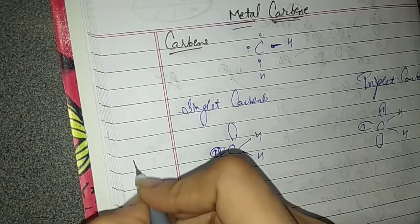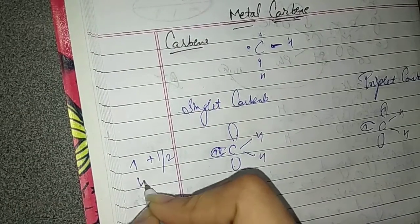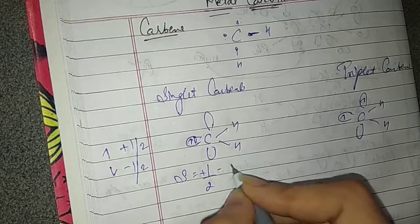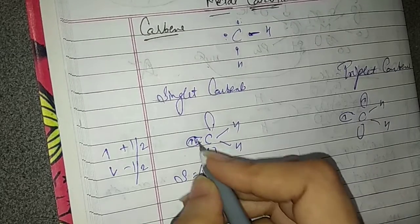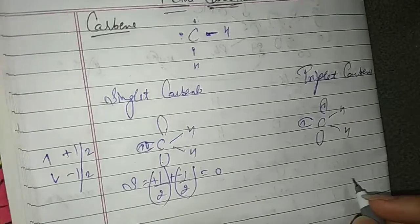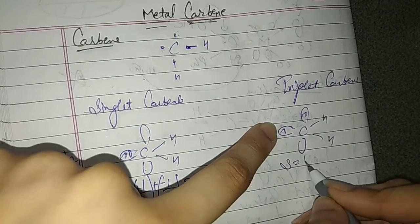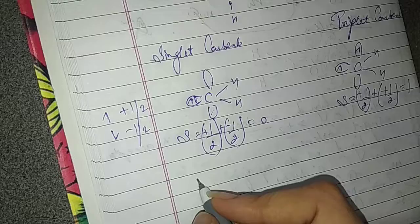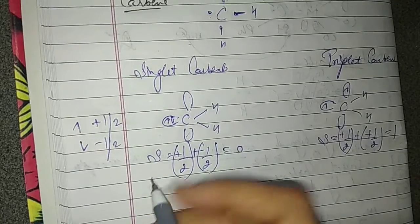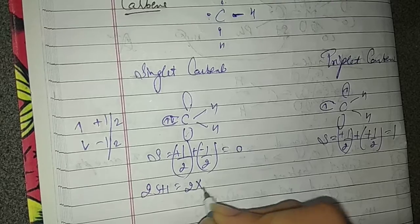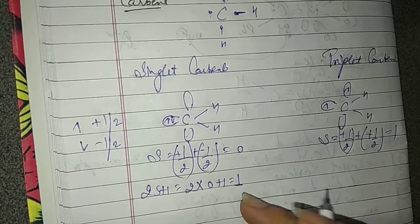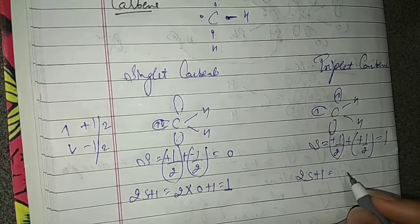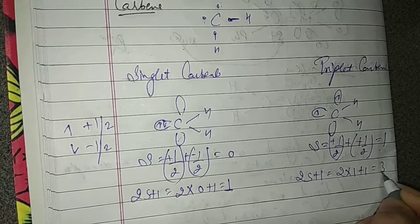If we consider spin, we observe the electron spin. We put plus half spin and minus half spin. Plus half minus half — because our electrons have opposite spin. If we remove spin, plus half and plus half gives S=0. Using the spin multiplicity formula 2S+1: 2 into 0 plus 1 equals 1, so this is singlet. Similarly for triplet carbenes, spin multiplicity is 2 into 1 plus 1 equals 3, which is why we call it triplet carbene.